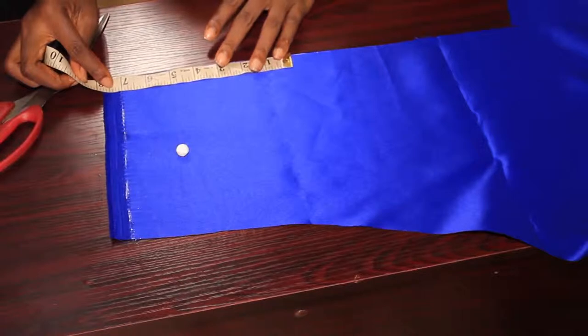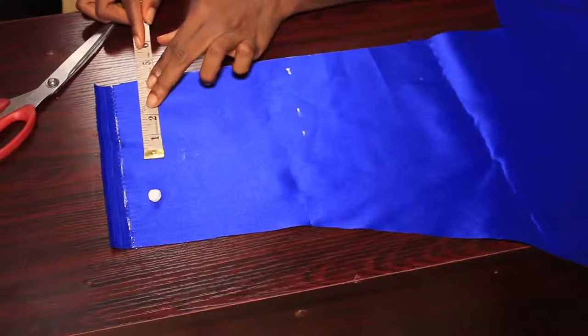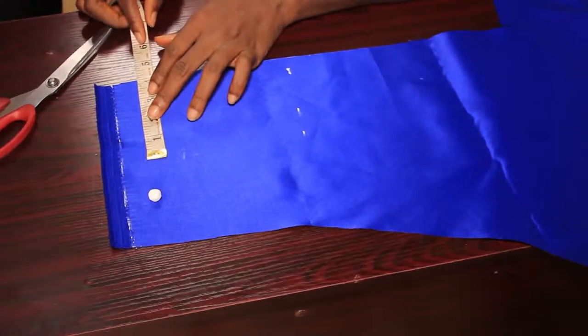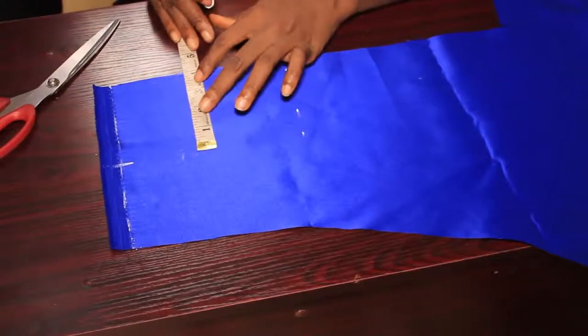For the width I marked seven inches and for the height I marked four inches. Mark more if you want a bigger bow or less if you want a smaller bow.